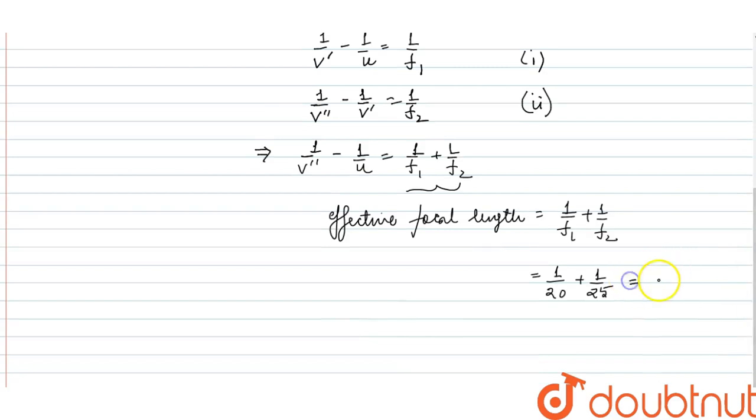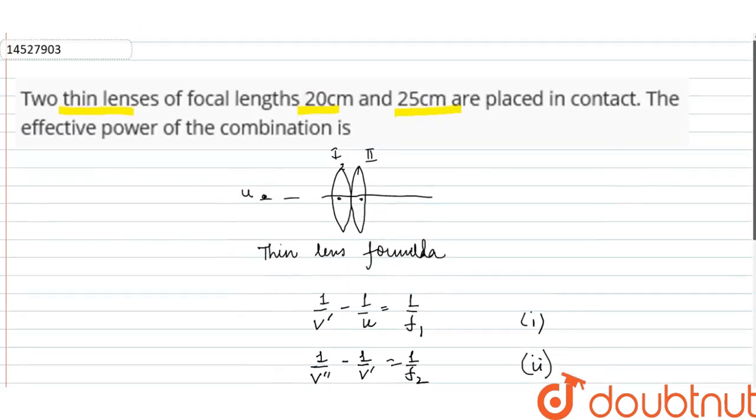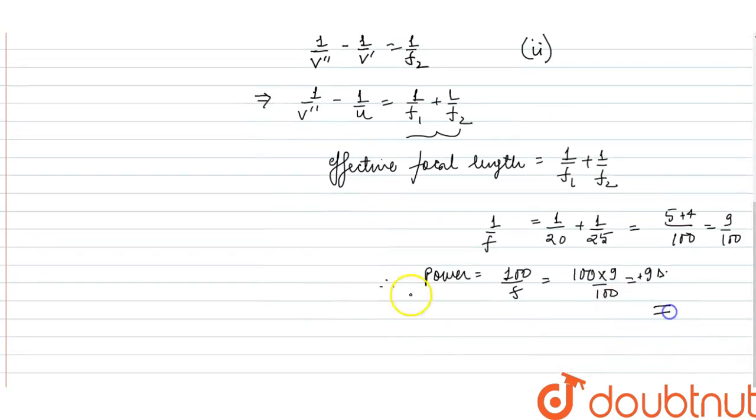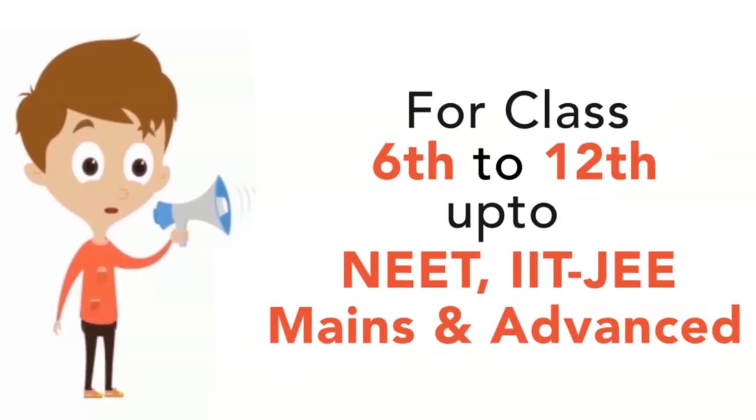So this equals 5/100 + 4/100, which is 9/100. This is our effective focal length. Therefore, power equals 100/f, so 100 × 9/100 equals 9 diopter. The effective power of the combination is +9 diopter.